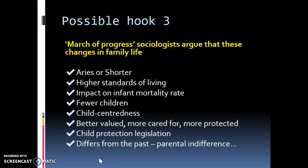Regarding hook number three: the March of Progress. Sociologists argue that these changes in family life have been positive. You can develop this by discussing who the March of Progress theorists are — Aries and Shorter — who look at childhood from a historical viewpoint. They recognise that throughout the ages, childhood has improved because there is a better standard of living. This has had a positive impact on the infant mortality rate — a useful link to the demography topic — and because of cleaner housing and better living conditions, babies are no longer dying as frequently, resulting in fewer children.